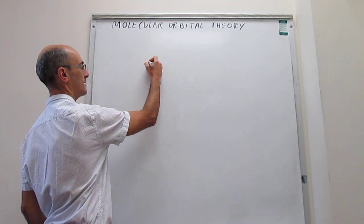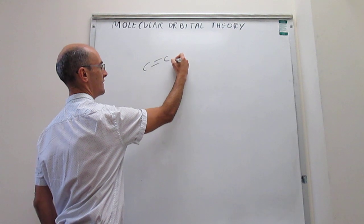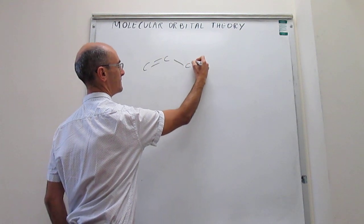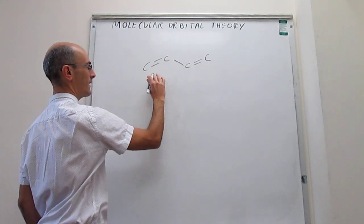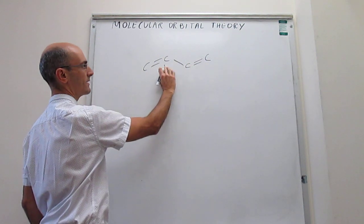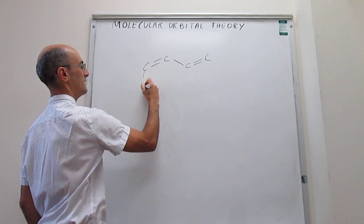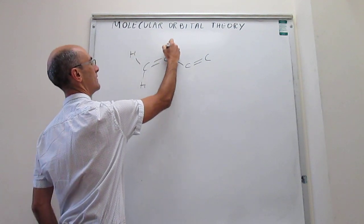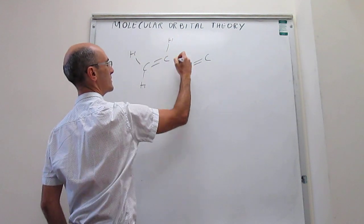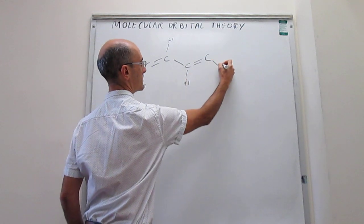Butadiene has a Lewis structure that looks like this. It has four carbon atoms with alternating single and double bonds, and then saturation with hydrogen atoms.